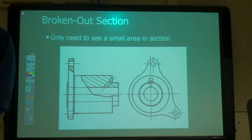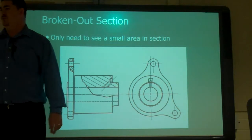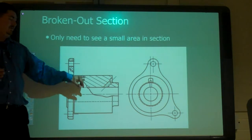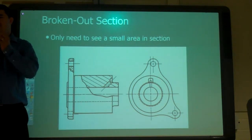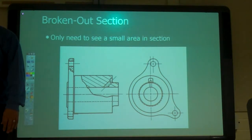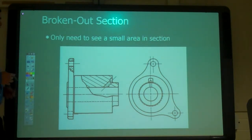And then next week, when we get to dimensioning, you'll understand why we do that. Because one of our dimensioning rules is we can't dimension things that are hidden. So if you have something that's hidden, you want to dimension it. Breakout section, now it's solid, now you can dimension to it. Okay? Any questions on breakouts? All right.